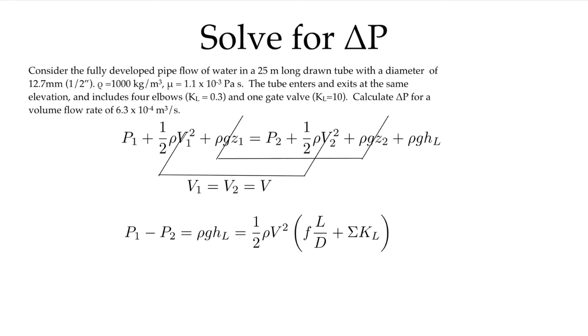So what we're left with is P₁ - P₂ = ρghL. We can expand that head loss in terms of (1/2)ρV² times the major losses (friction factor times the ratio of the length of the pipe over the diameter) plus the sum of all the minor losses.